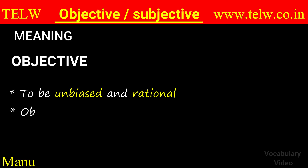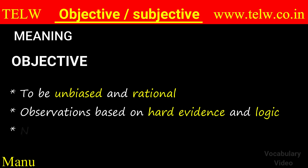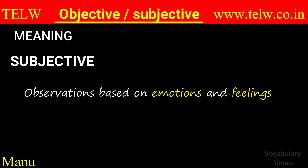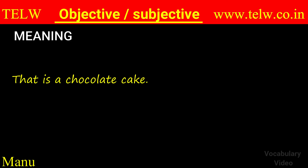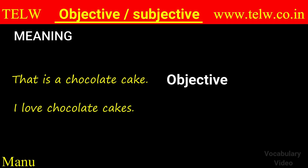What do they mean? Objective means to be unbiased and rational. You base your observations on hard evidence and logic — there's no place for emotions. But subjective is just the opposite: your observations are based on emotions and feelings. For instance, 'that's a chocolate cake' is an objective statement — it simply tells what the thing is. But 'I love chocolate cakes' is a subjective sentence. This feeling exists only in the mind — it's a sentiment, a sensation.